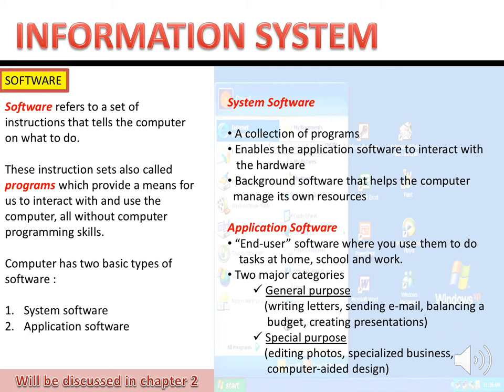The second type of software is application software — end-user software you can use to do your tasks. For example, as a student you do your assignment using Microsoft Word or do a presentation. Application software has two types: general purpose and special purpose. General purpose includes tools for presentations, creating budgets, making a poster, or doing assignments.